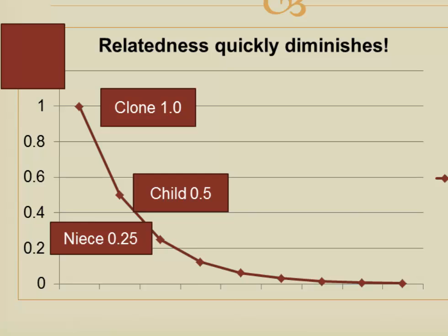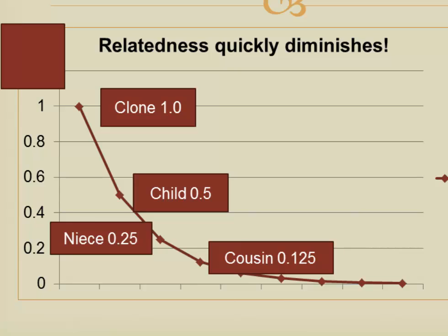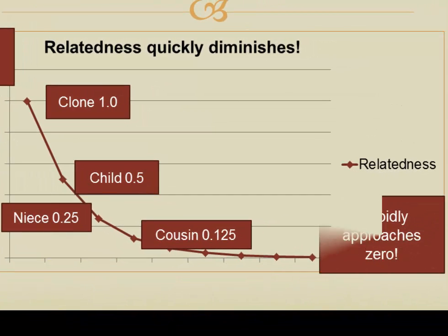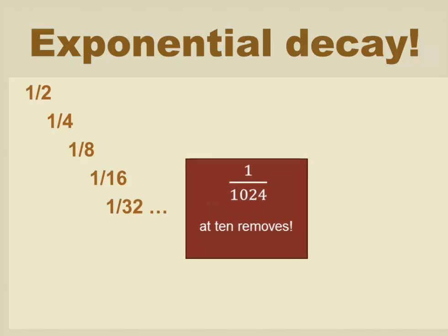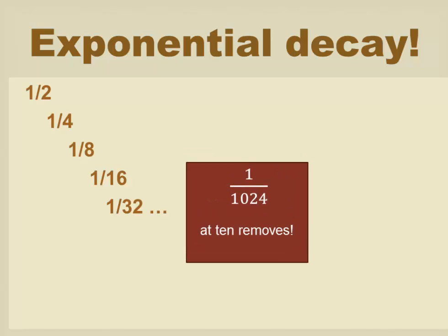To go from your sibling to a niece or nephew, we multiply 0.5 times 0.5 and we get 0.25. That's also your relatedness to a grandchild, or to a sibling of your parent — an aunt or uncle. To go to the offspring of one of those siblings, who we call first cousins, we multiply 0.25 by 0.5, giving us 0.125. So relatedness rapidly approaches 0, going from a half to a quarter to an eighth to a sixteenth to a 32nd. This is called, in mathematics, exponential decay. At just 10 removes away, relatedness is going to be 1/1,024.